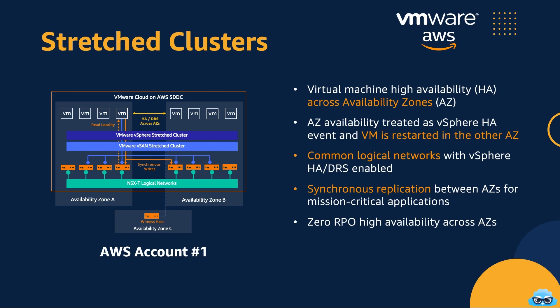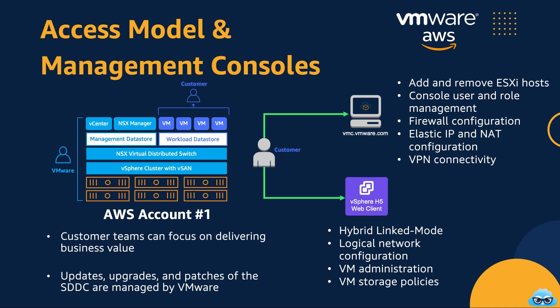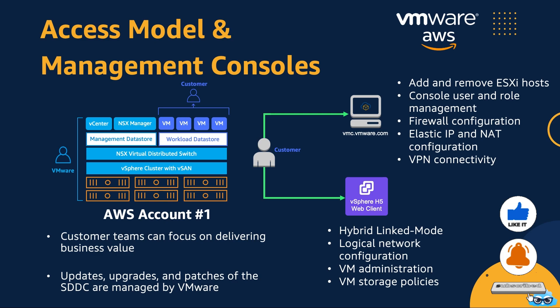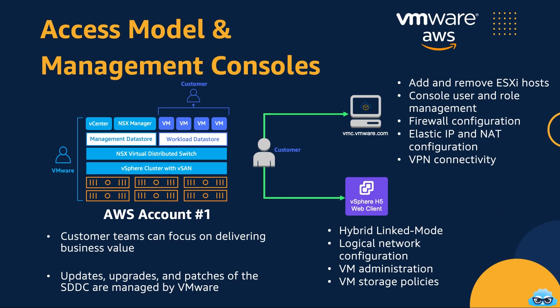Stretched clusters create a distributed and fault-tolerant architecture that guarantees data integrity and continuous operations, even in the face of unexpected disasters or outages. It's the key to achieving zero RPO within VMware Cloud on AWS. In VMware Cloud on AWS, management is a breeze, and the focus is on what matters most — your virtual machines and applications. VMware takes on the responsibility of managing, upgrading, and patching the entire SDDC stack, so you can rest easy knowing that your infrastructure is in expert hands.